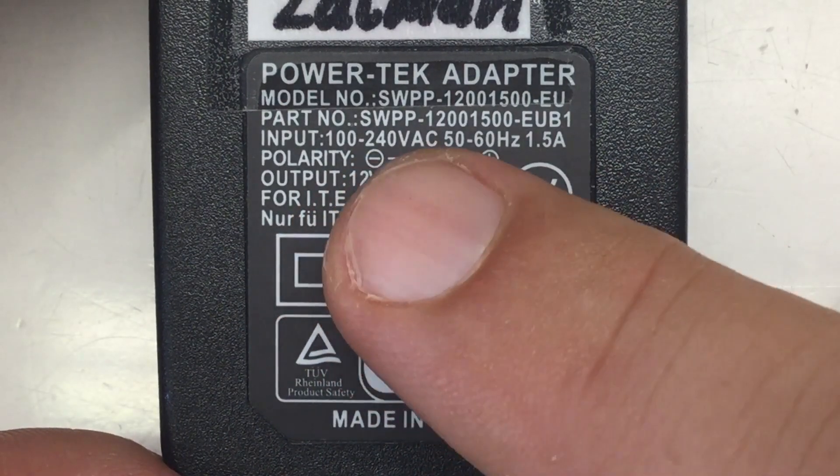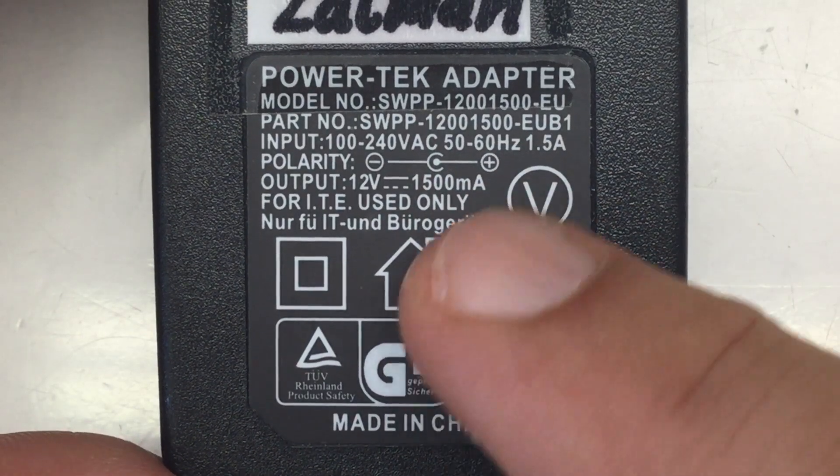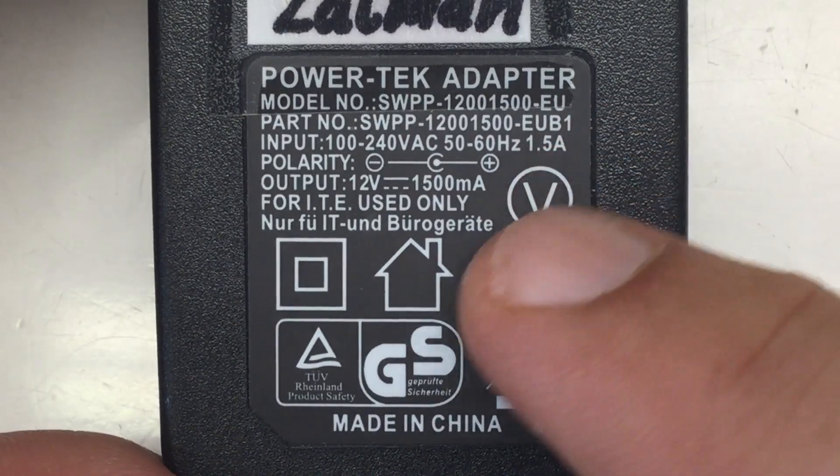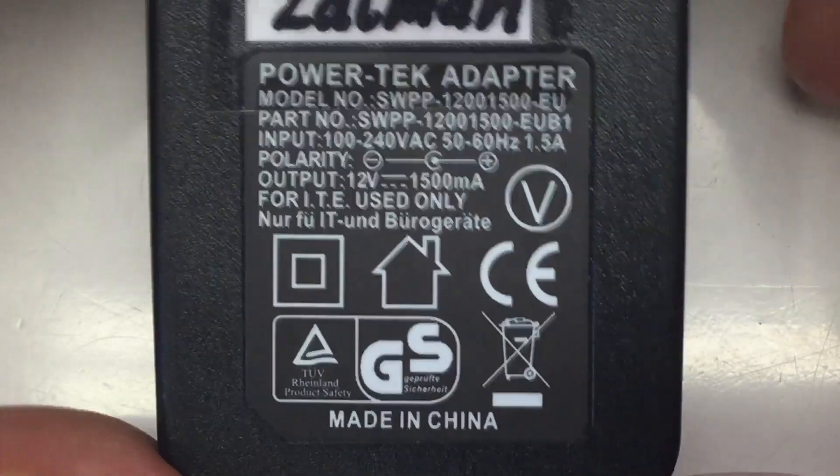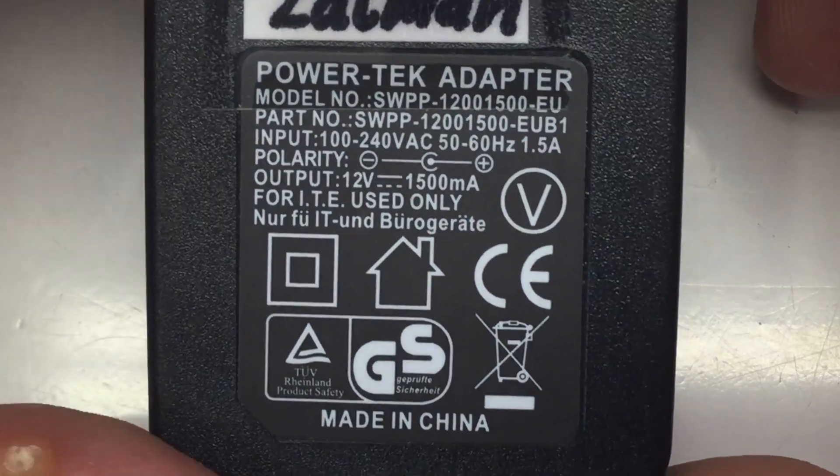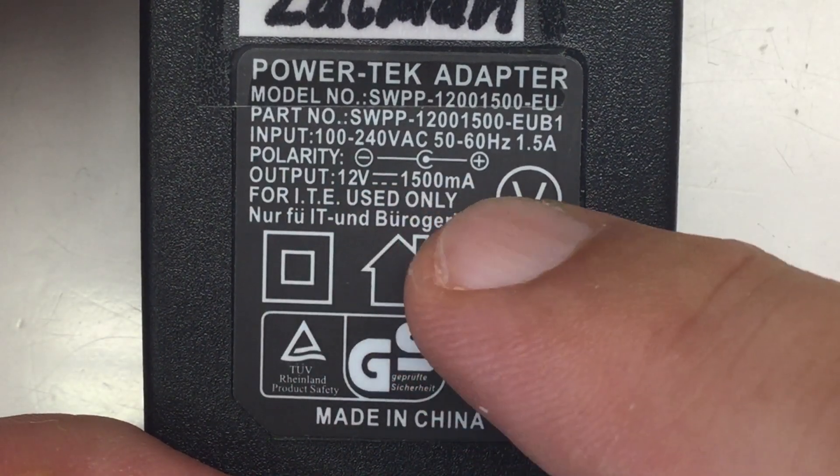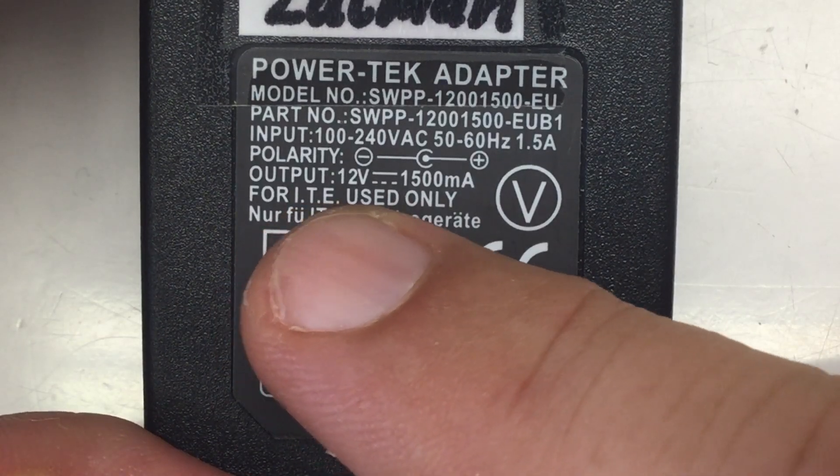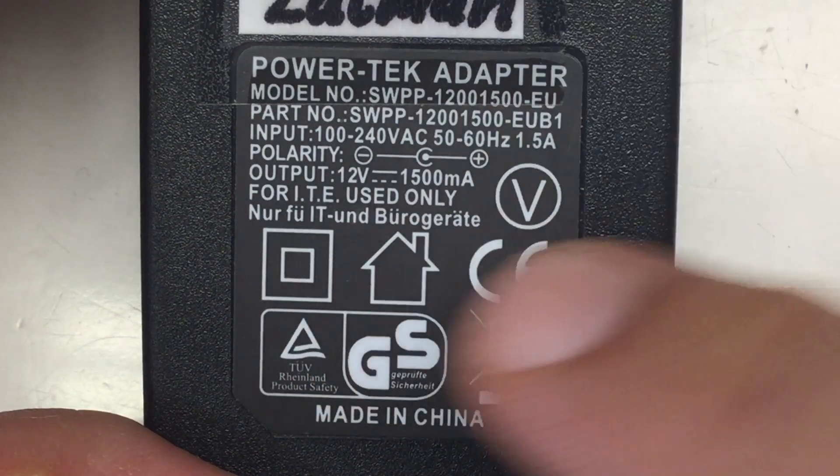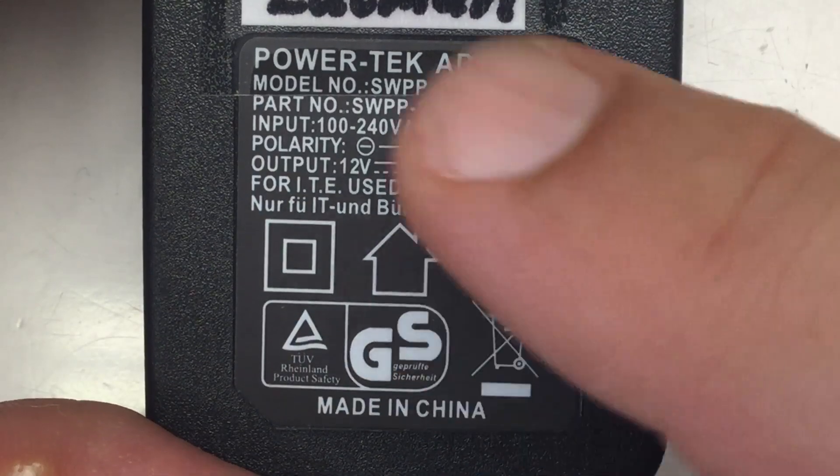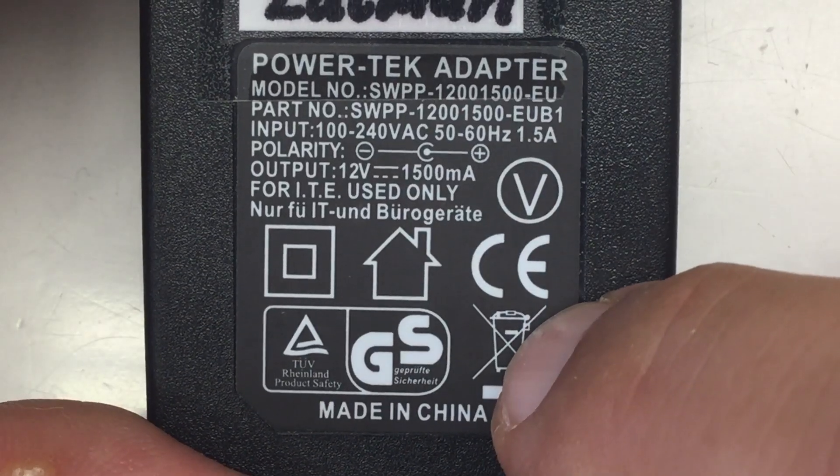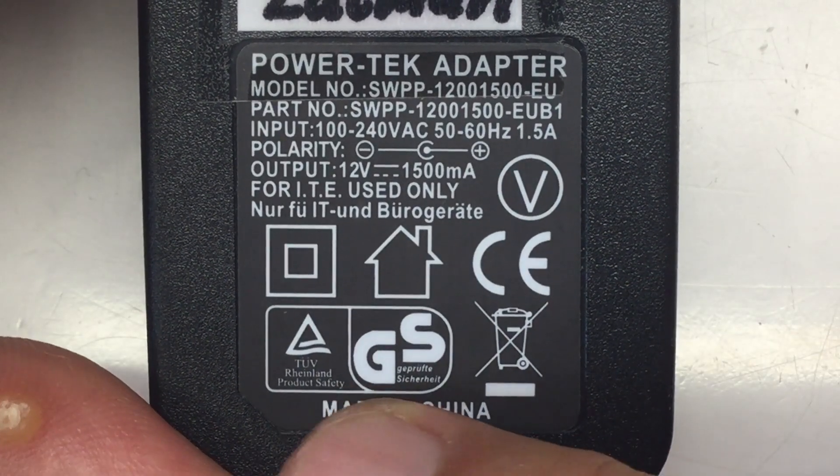So it's 100 to 240 volts AC, 50 to 60 Hertz, 1.5 amps. That's probably the peak when you're switching it on. Usual polarity at the output connector, so the outside is ground, inside is positive. Output 12 volts, 1500 milliamps. For ITE use only, whatever that means. It has all the features and labels and security it needs. I cannot throw it away. So we have to tear it apart. And of course it's made in China.